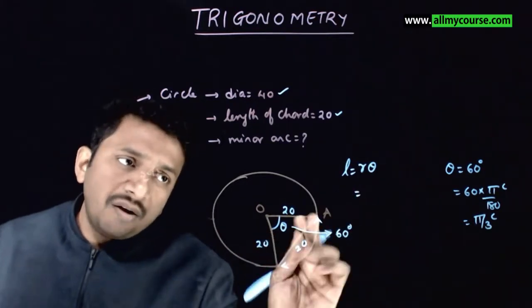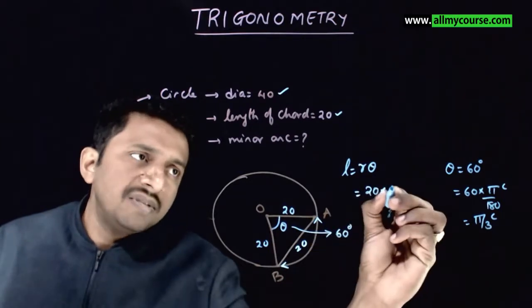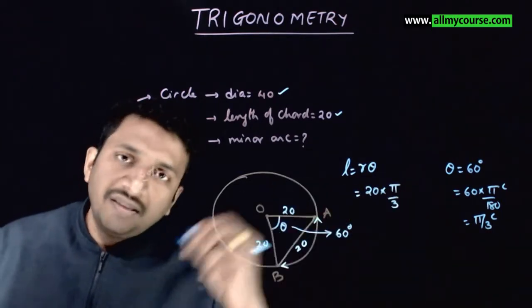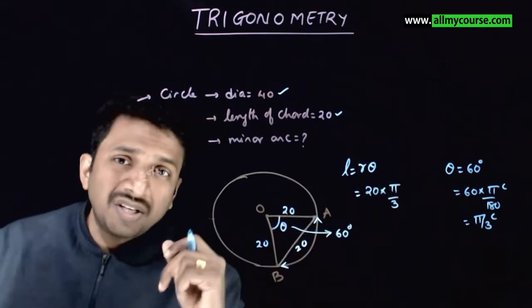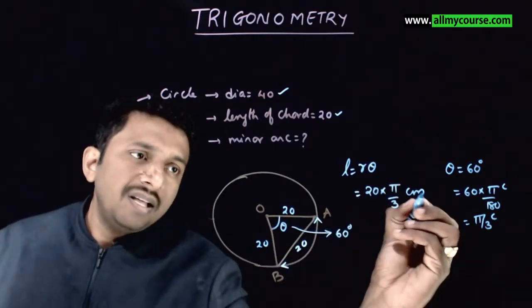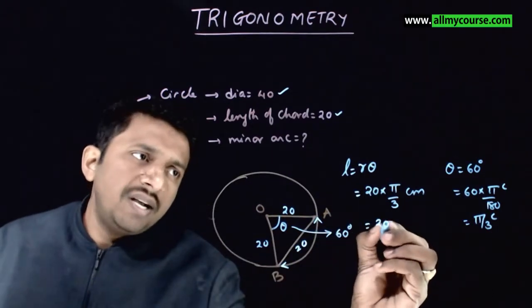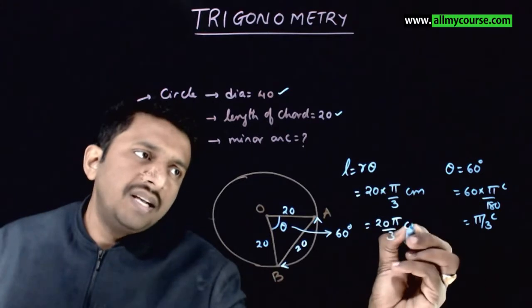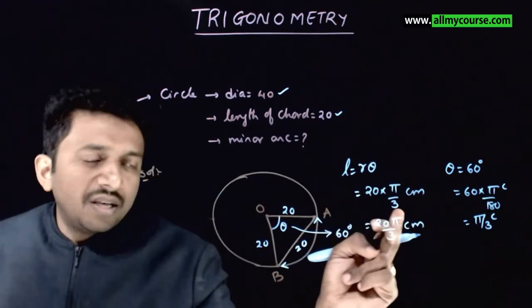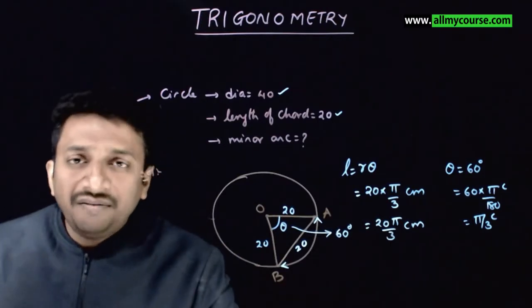So, the length of this arc is nothing but r is 20 times theta is pi by 3. Radians is a dimensionless quantity. So, 20 is in centimeters, so the length of the arc will also be in centimeters. So the answer is 20 pi by 3 centimeters. Again, substitute pi equals 3.14 and calculate the answer if required.